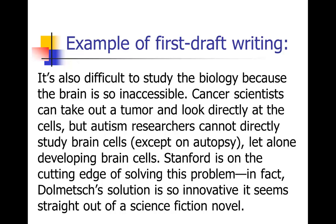One more example from my own work. This was a paragraph from the lead of a story, and it didn't read too badly on the first draft, but I'll show you what happens on revision. It said: 'It's also difficult to study the biology because the brain is so inaccessible.' Notice the 'it is' I've started with — I've told you not to use 'it is' or 'there is.' 'Cancer scientists can take out a tumor and look directly at the cells, but autism researchers cannot directly study brain cells except on autopsy, let alone developing brain cells. Stanford is on the cutting edge of solving this problem. In fact, Dolmetsch's solution is so innovative it seems straight out of a science fiction novel.' It's got some nice pieces, but it's not great — I've got really boring verbs and it's a little wordy. So that was my first draft, and I went back and revised it.